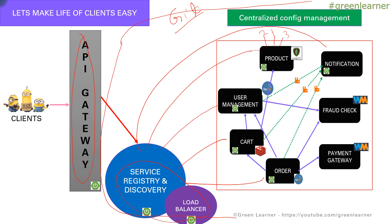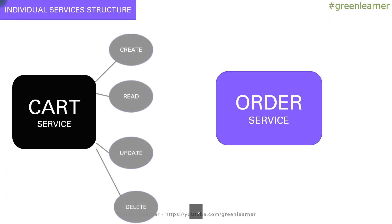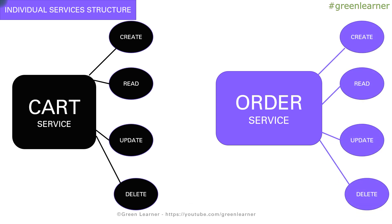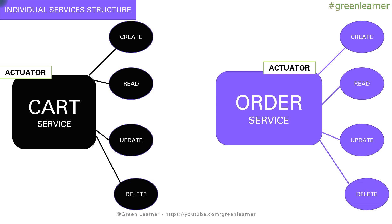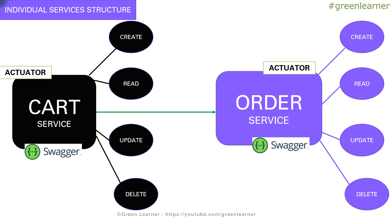Now let's look at how the individual service is going to look when we implement it, using the cart service and order service as examples. All of these services are going to have CRUD operations with basic endpoints, plus other endpoints as per business needs. To track the health status of each individual service we are going to have the Actuator. To interact with and document individual services we are going to use Swagger, which is very efficient for service-to-service interaction. Since cart service is going to call order service and there may be instances where order service is down or there is some internal issue causing delays in response, we are going to implement a circuit breaker in the communication.